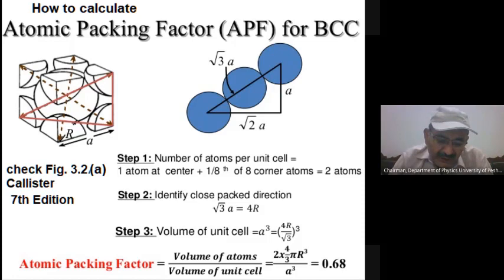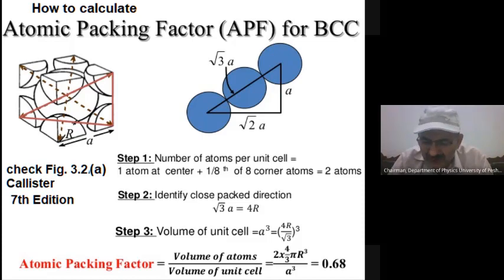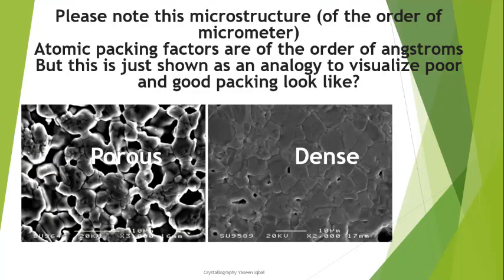When measuring the dielectric constant of a material that is 90–95% dense, people consider 95% dense sufficient for quality. But if it is only 50% dense, you are measuring 50% of the property of space — it will not give you the true material property. The packing fraction deals with the density of the unit cell, and people calculate it in various areas.